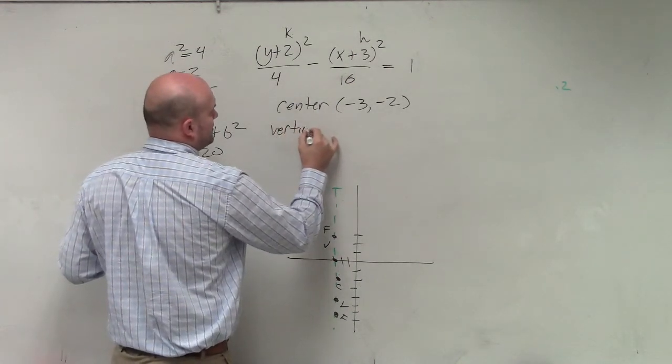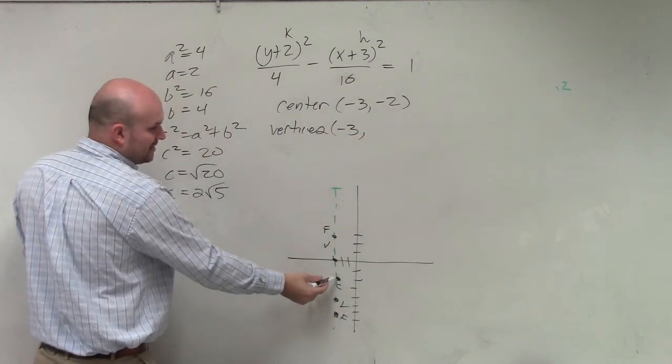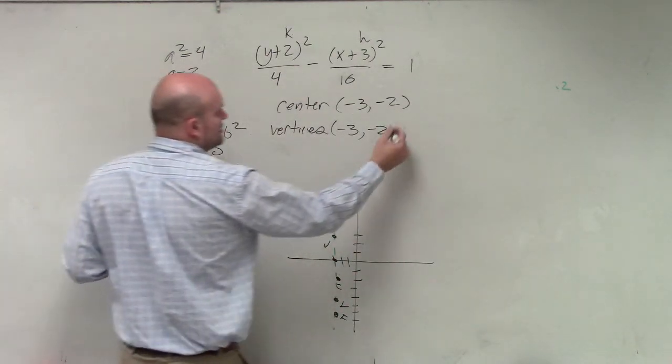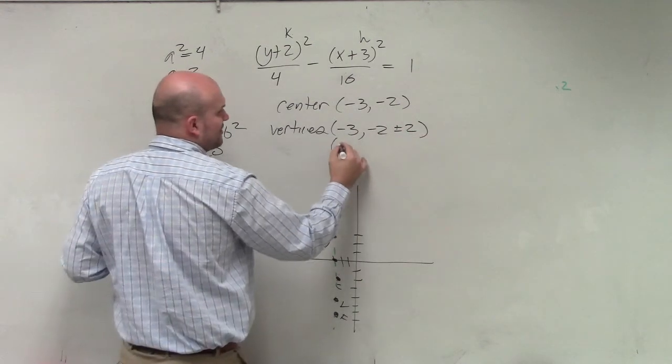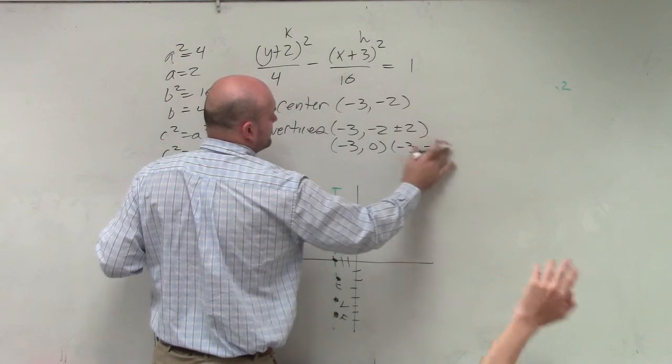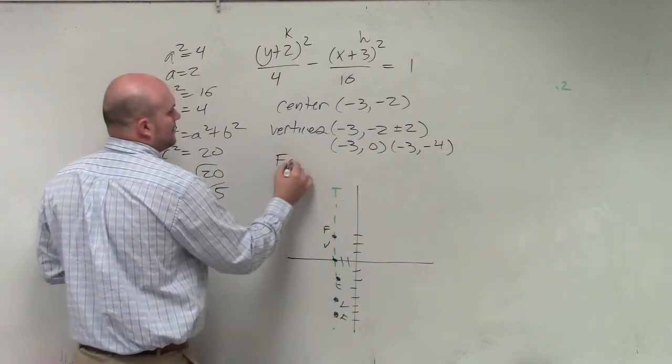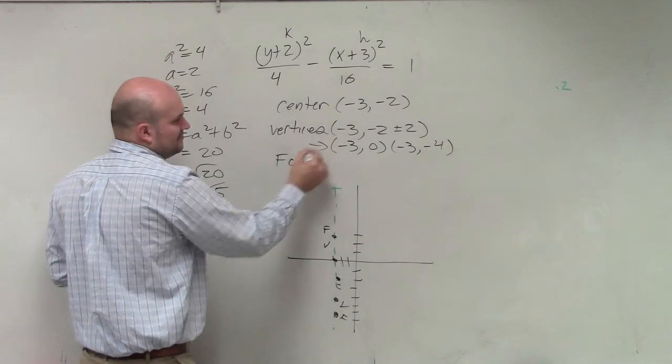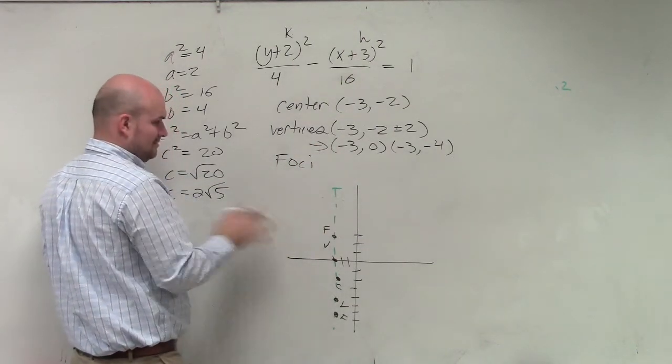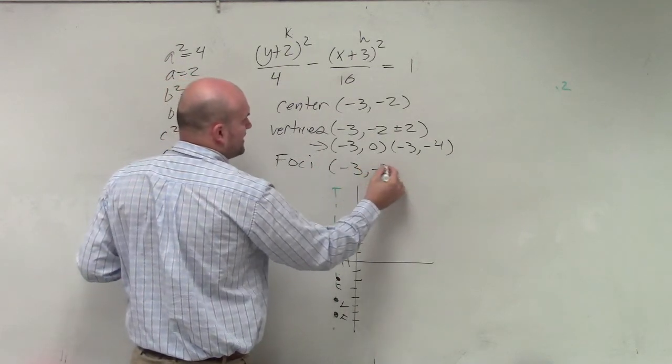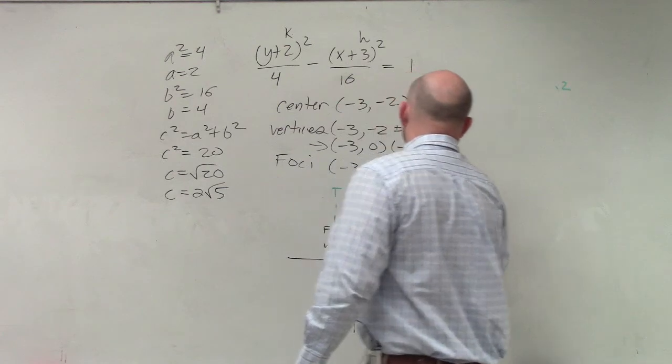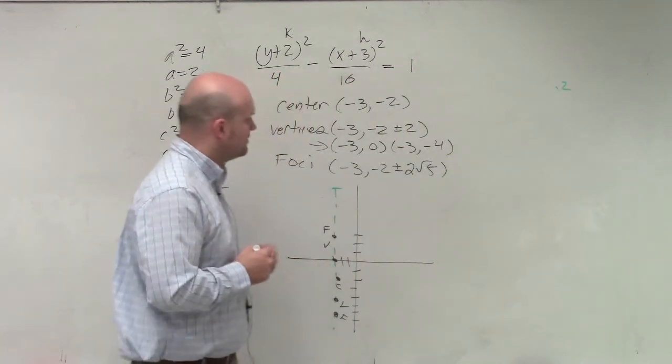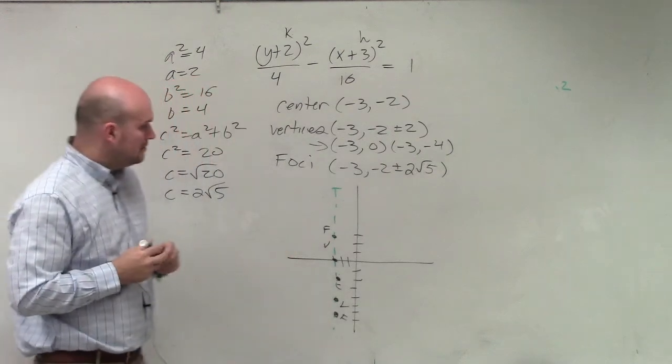So my vertices is negative 3. And then I'm basically going negative 3, negative 2. But I'm going up or down. I'm going up or down, what, 2? So you'd say plus or minus 2. But we can actually rewrite that as negative 3, 0, and negative 3, negative 4. I would like you to simplify those. I mean, but you should put them like that. But for the next one, when it's a radical, yes, don't. That's as far as you're going to go. Negative 3, common negative 2, plus or minus 2 square root of 5. I don't want you converting that to a decimal and adding, you know. All right.